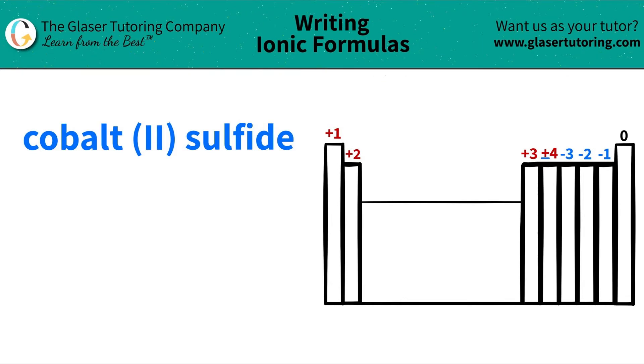Today we are going to be writing the formula for the ionic compound cobalt (II) sulfide. So let's find where these elements are on the periodic table and then we can write the formula.